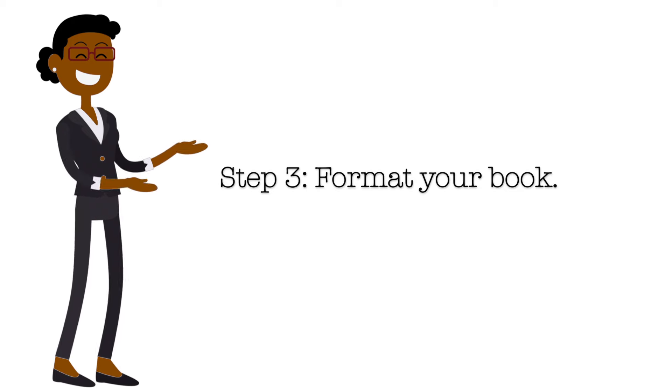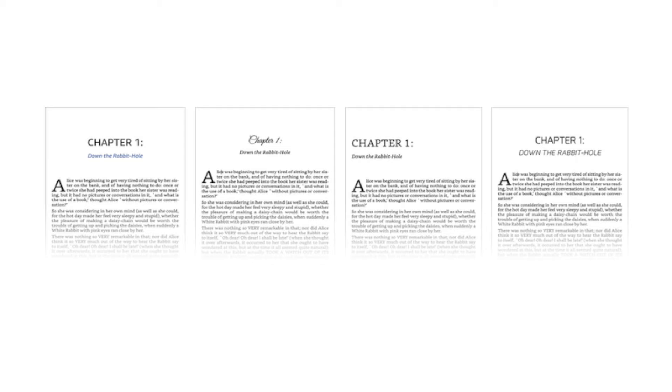Step number three is to format your book. Once you've chosen a self-publishing platform, you want to make sure that your book is properly formatted and ready for publication. Format your book to look like a book — prior to this step you were probably writing your manuscript in Microsoft Word or Google Docs and it was just looking like a document. This is the step where you can use software such as Kindle Create or even templates to format your book to actually look like a book.